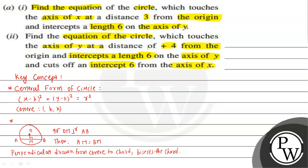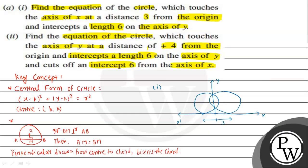For the first case, let us draw the xy-plane. The circle intercepts the y-axis at 6 units and touches the x-axis at a distance of 3. So the circle touches the x-axis at point (3, 0) and at point (minus 3, 0). Let us name the point at (3, 0) as A and the point at (minus 3, 0) as B.